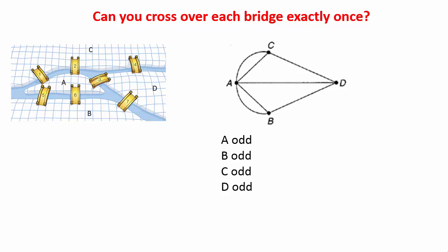What do we notice? All vertices are odd order. What does that mean? It means that the shape is not traversable because we are not allowed to have more than two odd vertices. So we can conclude from that that it is not possible to cross every bridge once only.